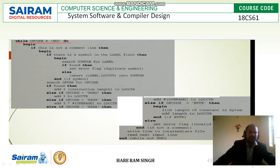While the opcode is not equal to END, we should keep on processing. If this is not a comment line, then begin the next instruction. If there is a symbol in the label field — as we know the format is first symbol, then opcode, then operand — if there is a symbol in the label field, then begin searching the symbol table for the label.